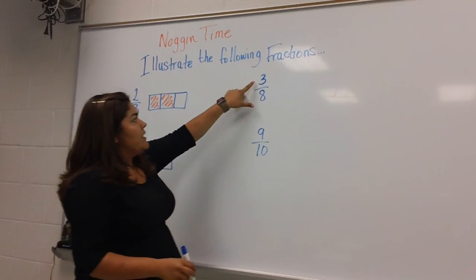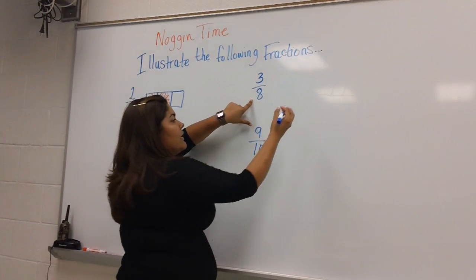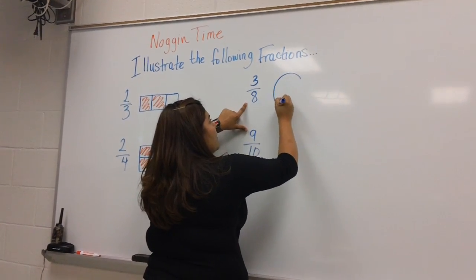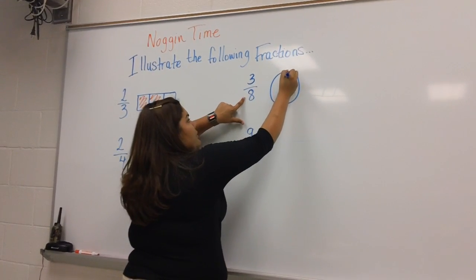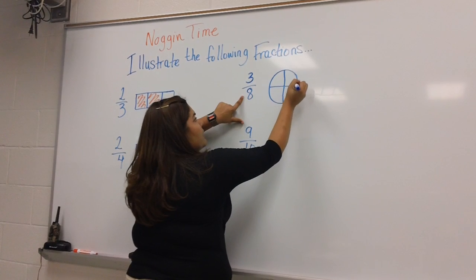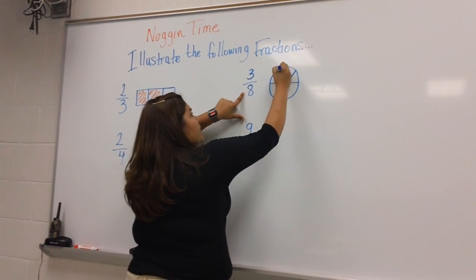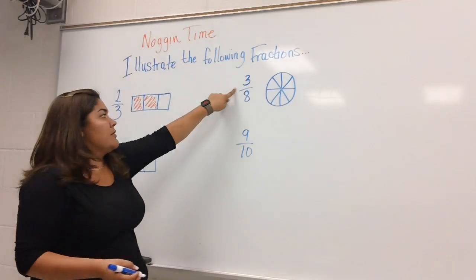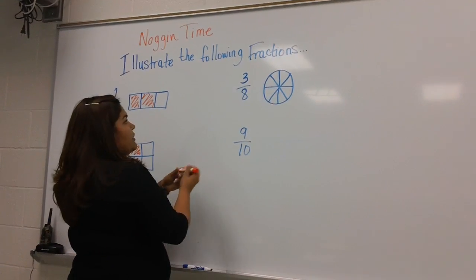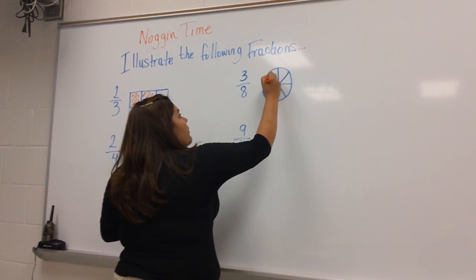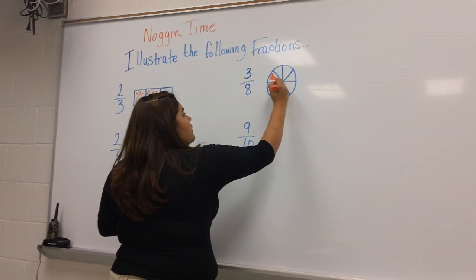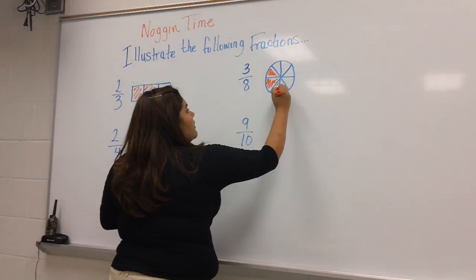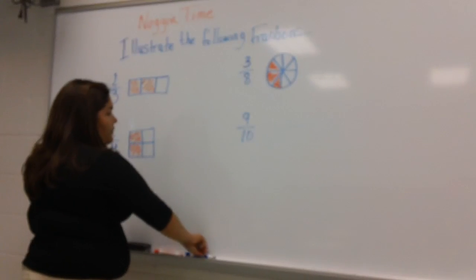For this fraction we have three-eighths, so we're going to take our whole and cut it into eight parts. We have our eight parts here and we're going to take three of those parts to make our fraction. So we have three-eighths.